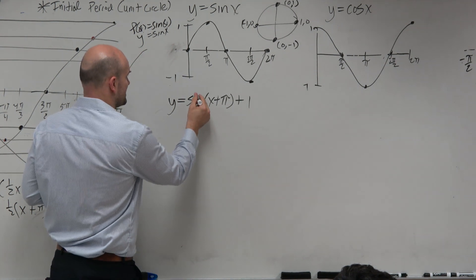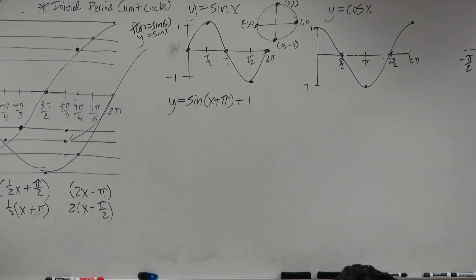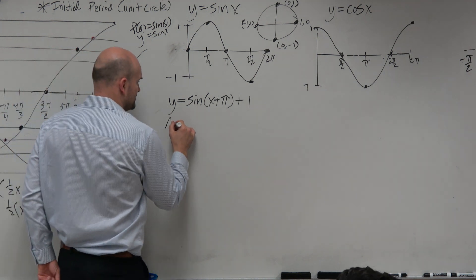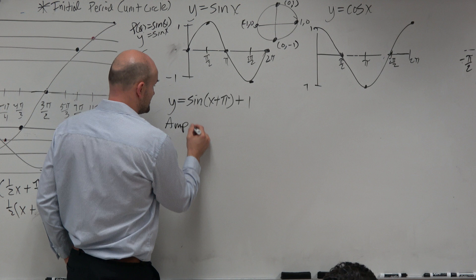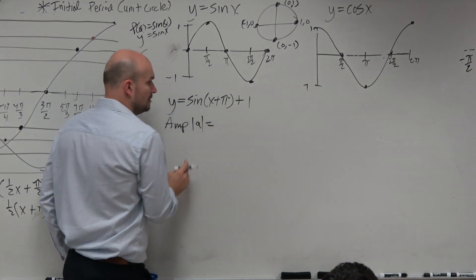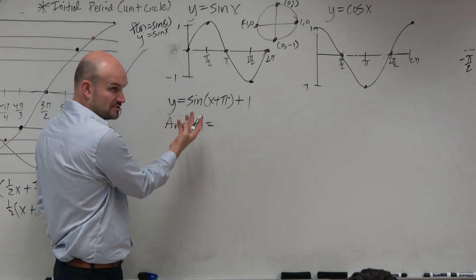So the first thing is, let's identify the amplitude, which I didn't write in there. So remember, the amplitude is the half distance from the max to the min. The amplitude is just the absolute value of a. Well, a is what we're multiplying outside of our function here, which is 1.